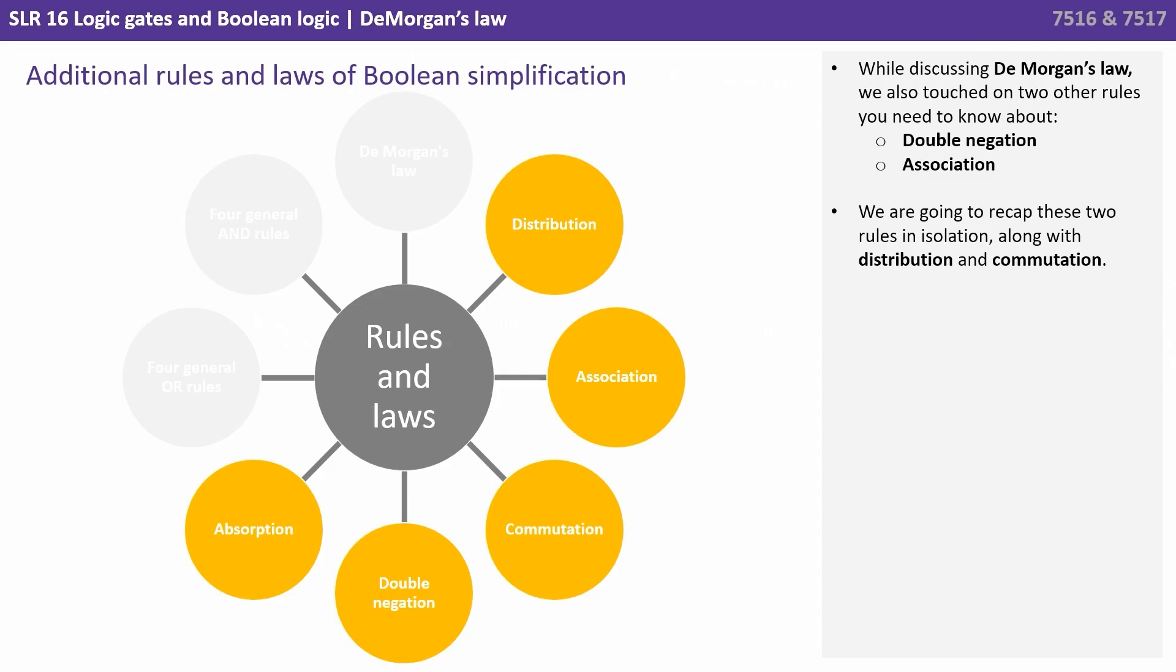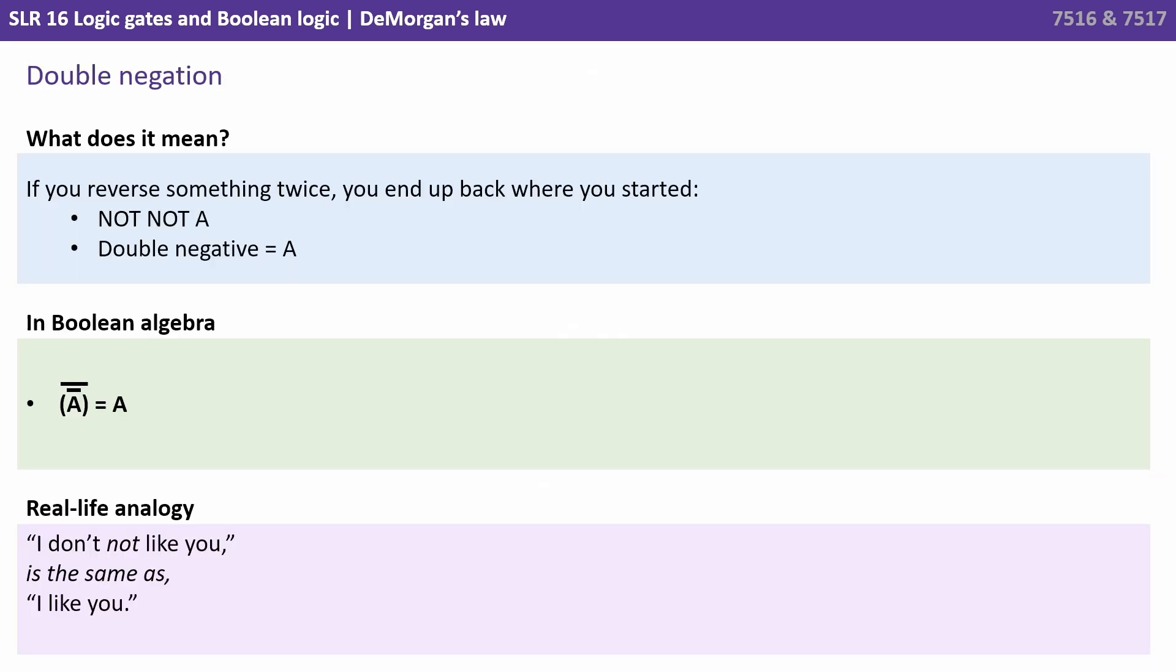While discussing De Morgan's Law we also touched on two other rules you need to know about. Double negation and association. We are going to recap these two rules in isolation along with distribution and commutation. So we'll start with double negation. This means if you reverse something twice you end up back where you started. So NOT NOT A, it's a double negative, it means A.